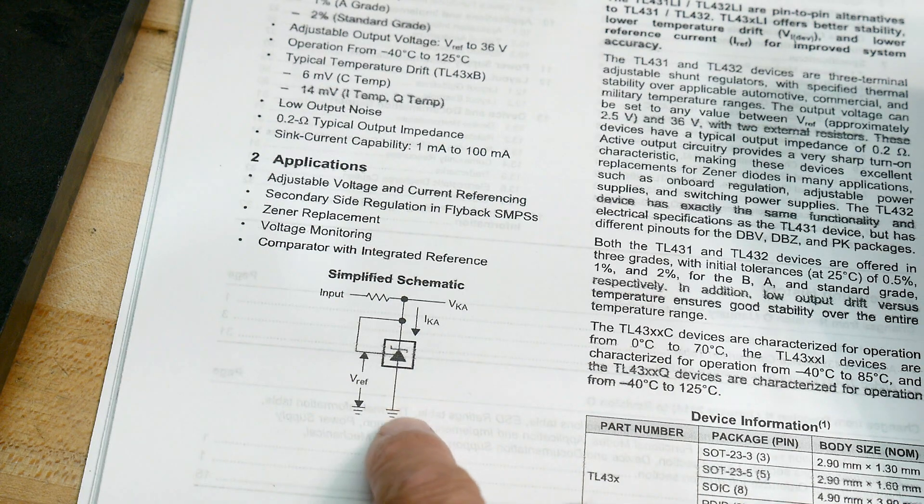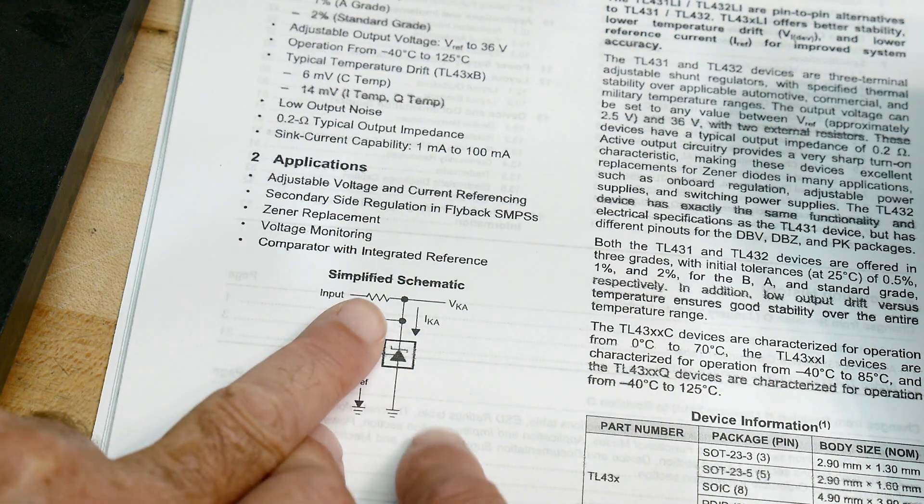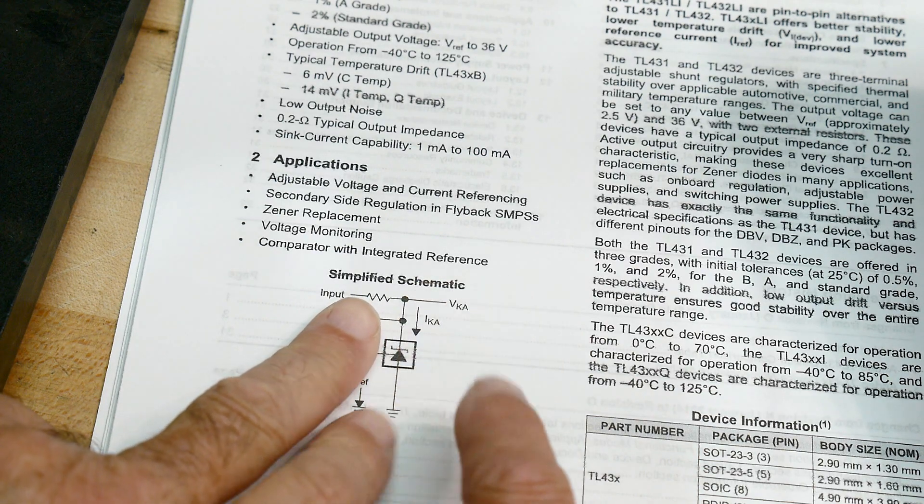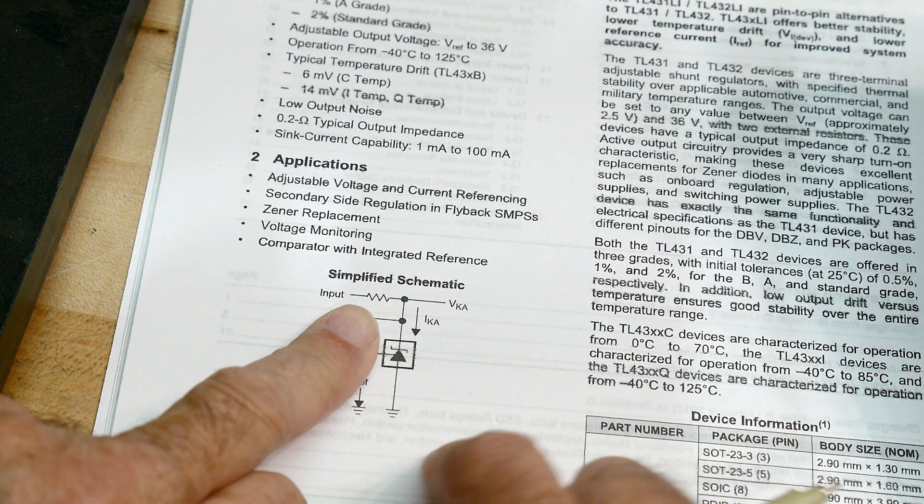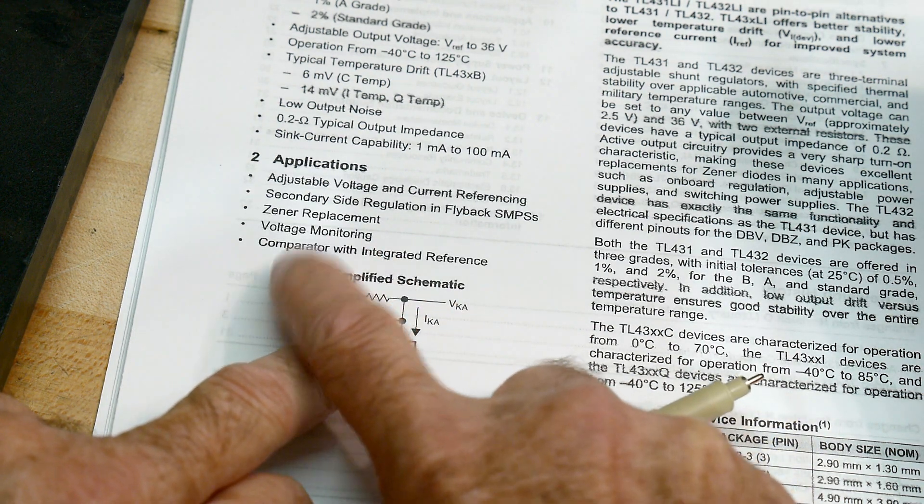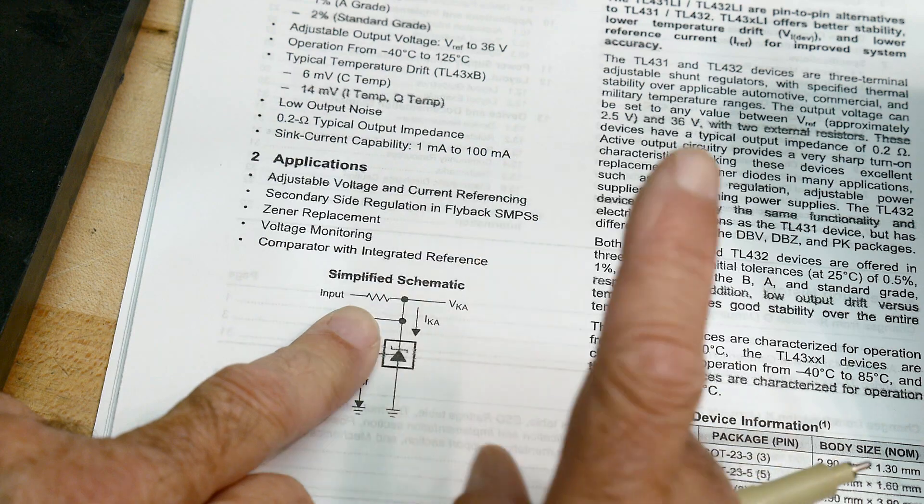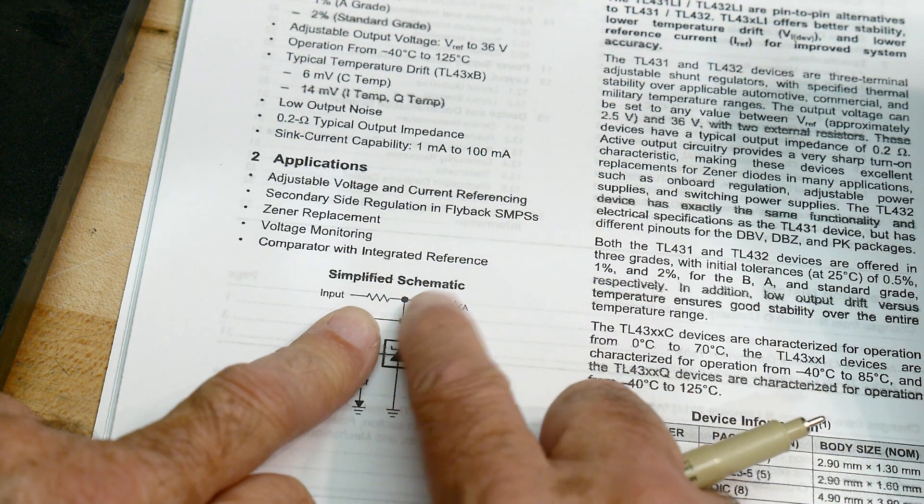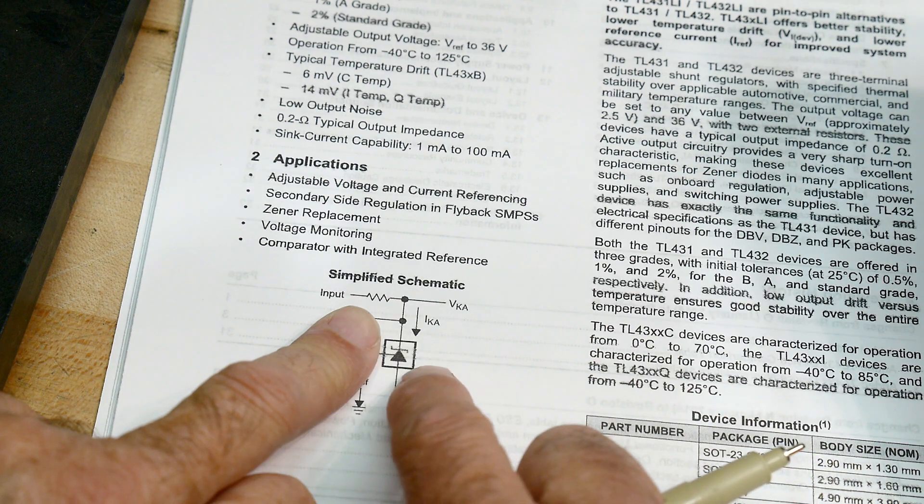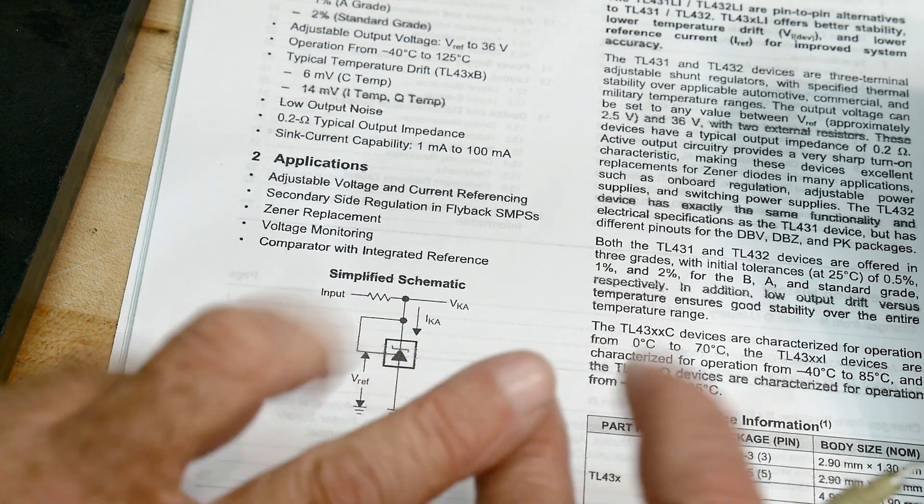This strange part is basically a programmable zener diode. That's the way you can kind of think of it. It acts like a zener diode. Whatever voltage this is, that's what's going to come out here. So if you have 12 volts coming in and this is magically 5 volts, then your output's going to be 5 volts.